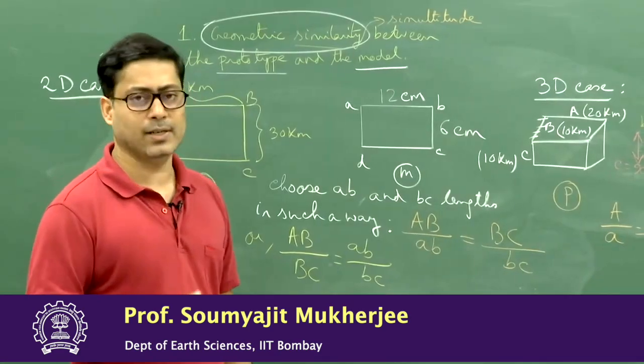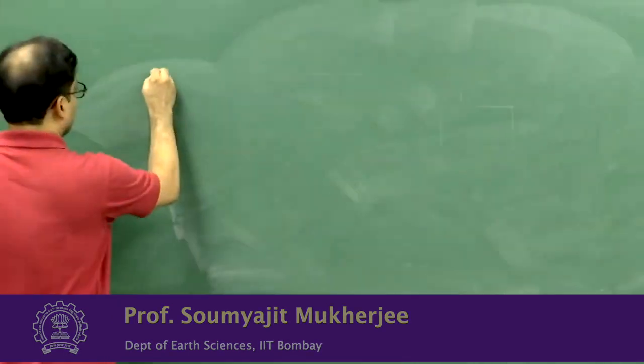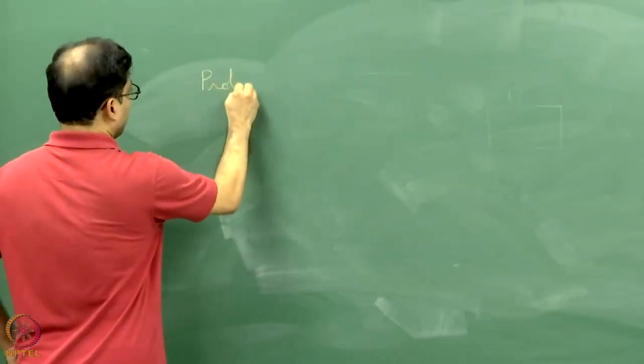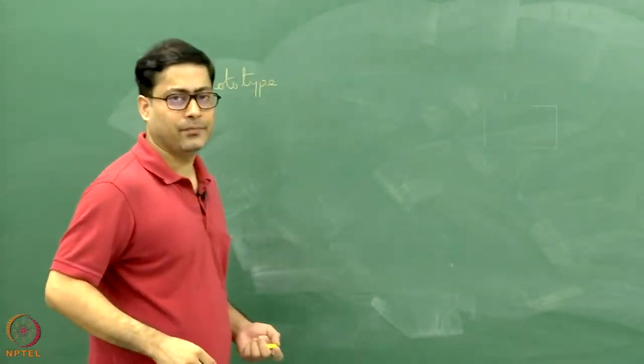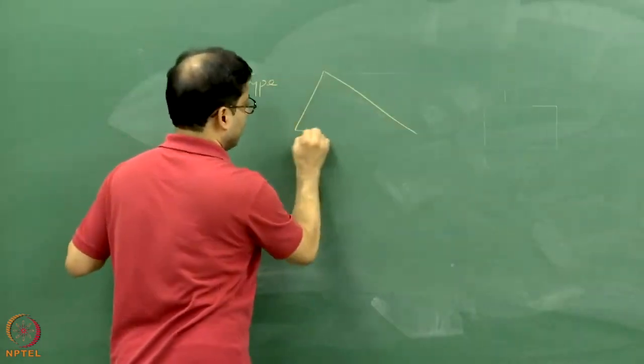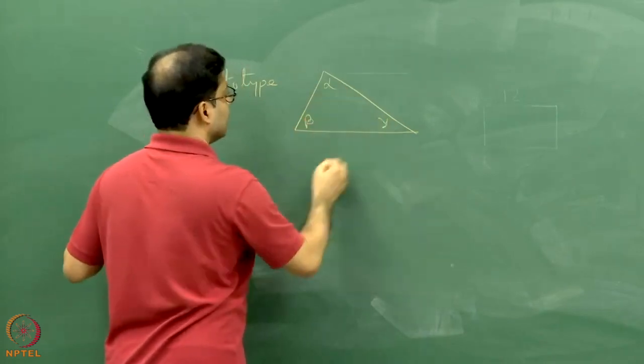One more easy thing I want to explain is the angle issue. The prototype is a triangular area. This angle is alpha, this angle is beta, that angle is gamma.